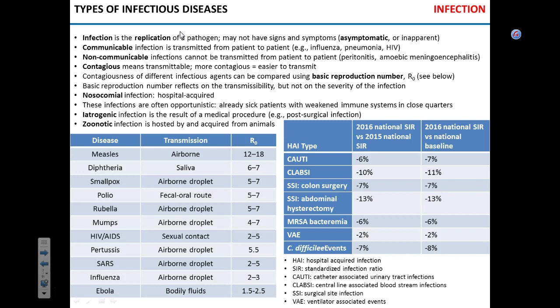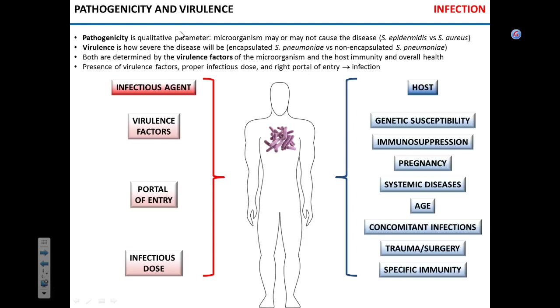Last week we finished with the discussion of different types of infection and also briefly talked about basic reproduction number. We are moving forward towards the discussion of what influences the outcomes of the infection, and we're going to talk about the whole infectious process from the standpoint of the microorganism — what steps does the infection go through.